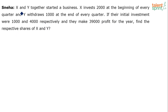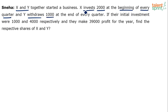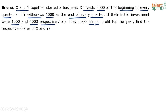So basically this is a question on partnership where there are two partners X and Y who have started a business. X invests 2,000 at the beginning of every quarter and Y withdraws 1,000 at the end of every quarter. Their initial investments are 1,000 and 4,000 respectively, and they make a total profit of 39,000. Find their respective shares.